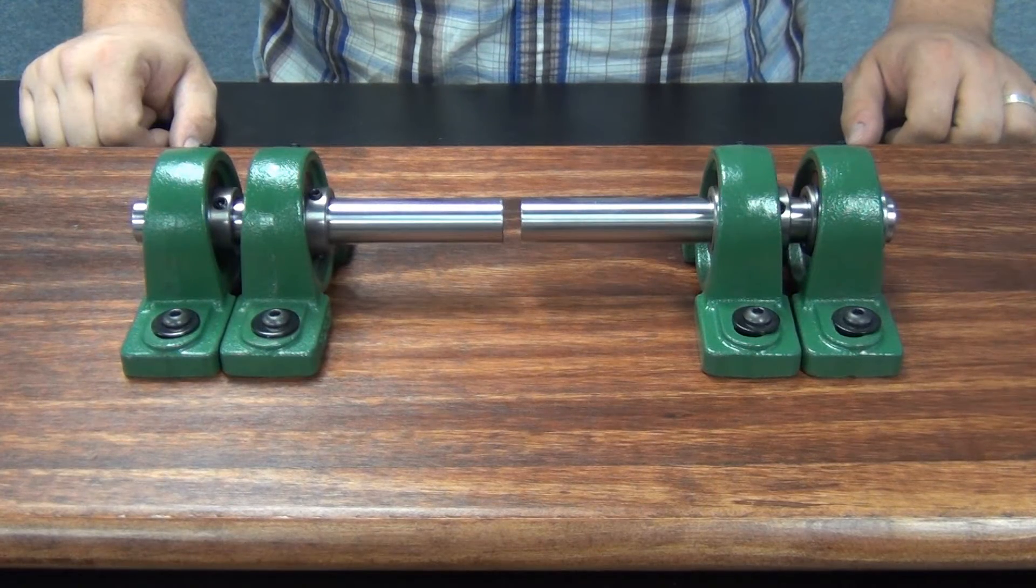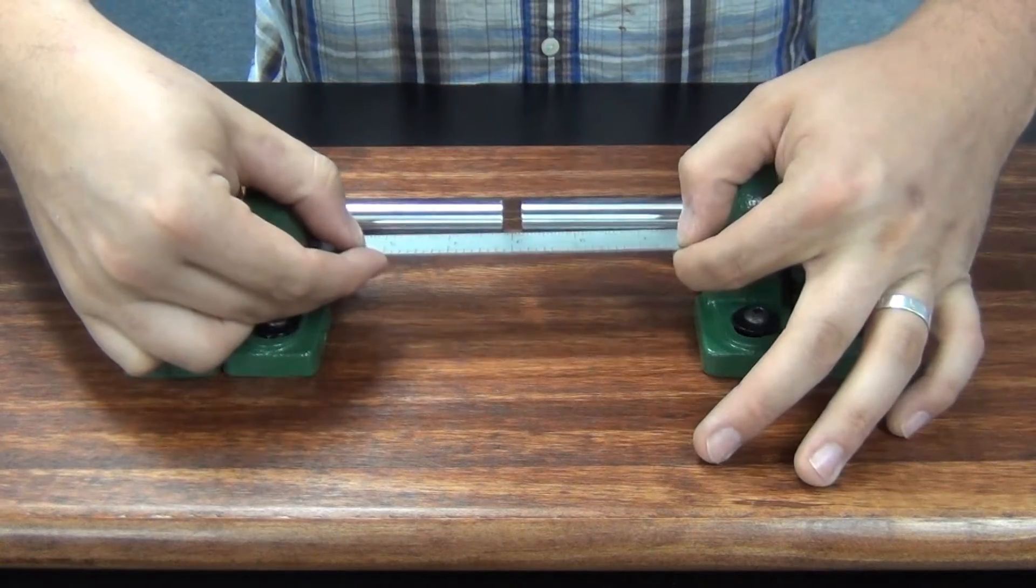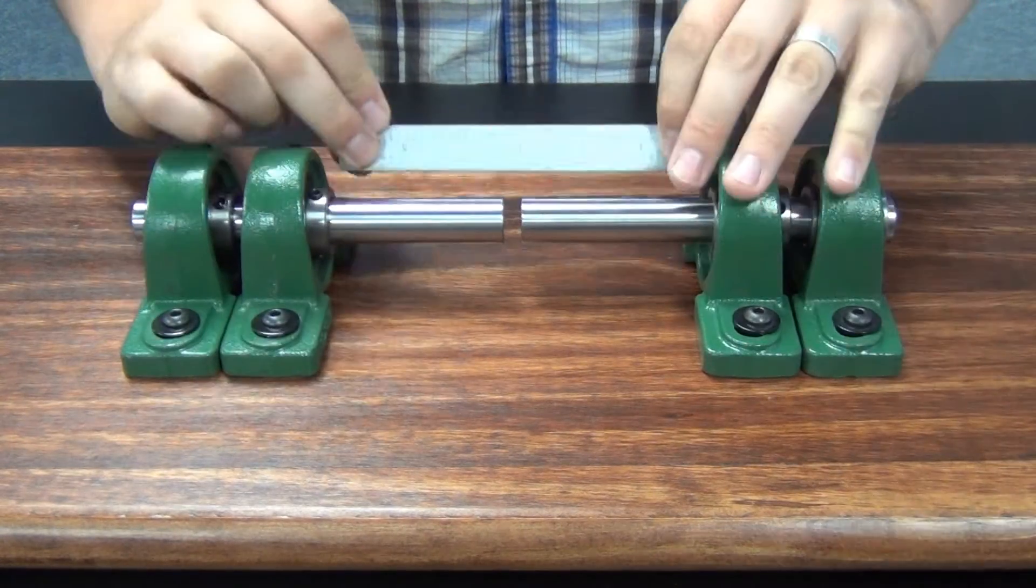Now we will start the install procedure. First, assure the misalignment between shafts is within the coupling's ratings. Complete misalignment information is available on Ruland.com.